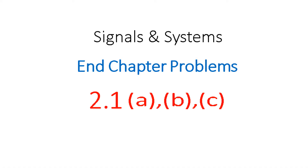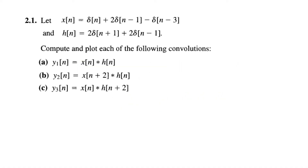In this video, we will be solving end-of-chapter problem number 2.1 a, b, and c. We have x[n] and h[n], and we have to compute x[n] convolved with h[n] for part a. For part b it will be x[n+2] convolved with h[n], and for part c it will be x[n] convolved with h[n+2].